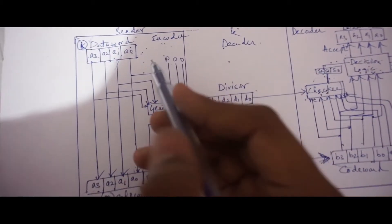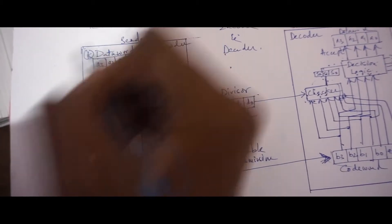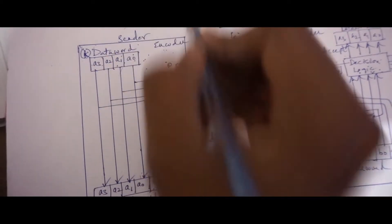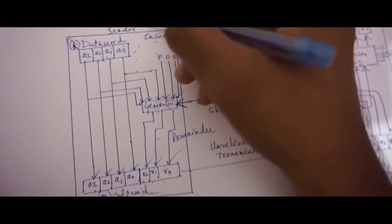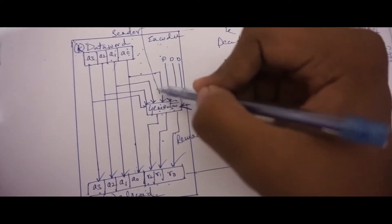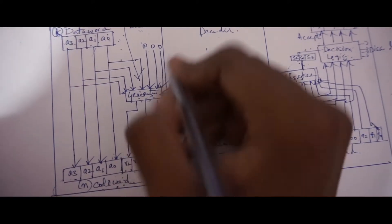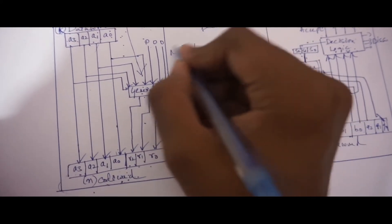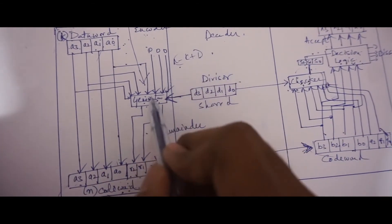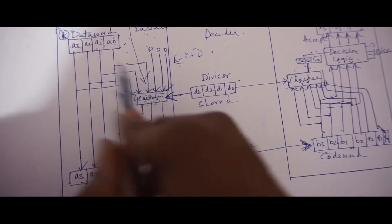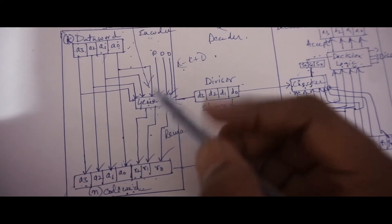That is k plus n minus k, which gives the result as n. This n-bit result is then fed to the generator. The generator then uses the divisor of size n minus k plus 1, which is predefined. This generator divides the augmented data word by the divisor using modulo 2 division.